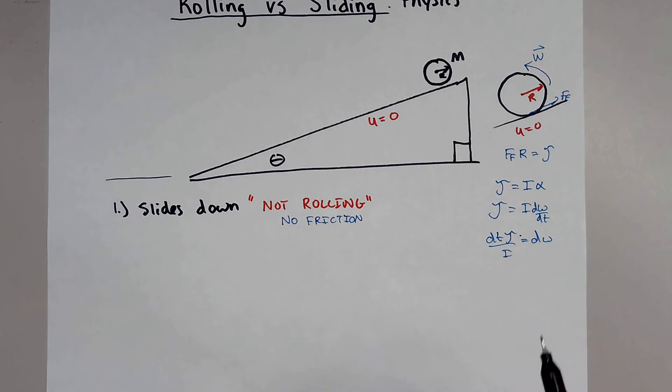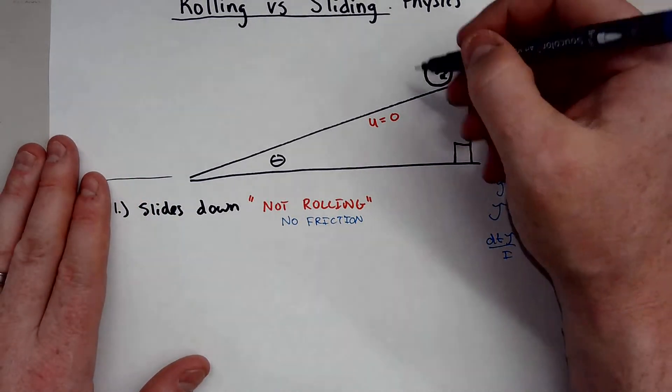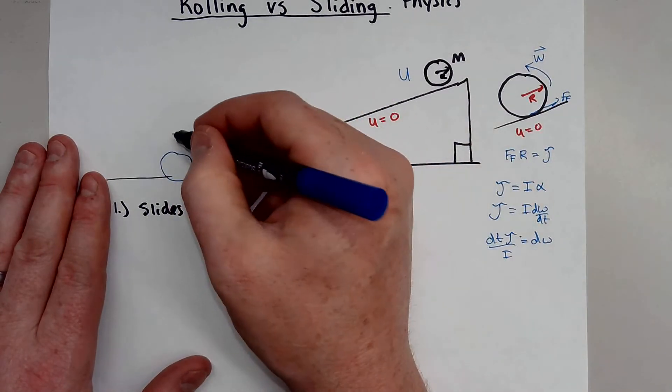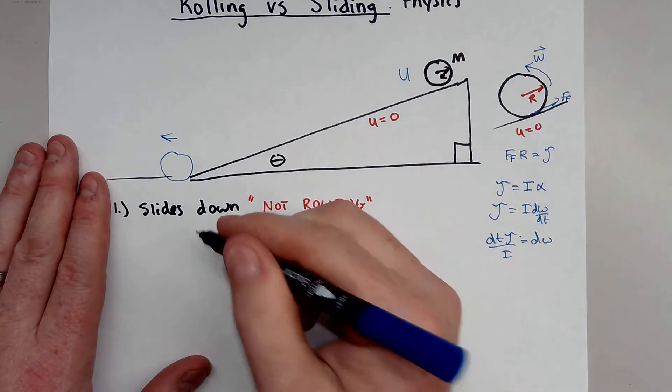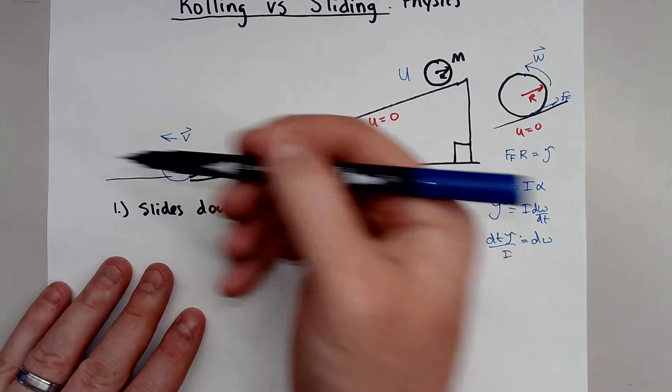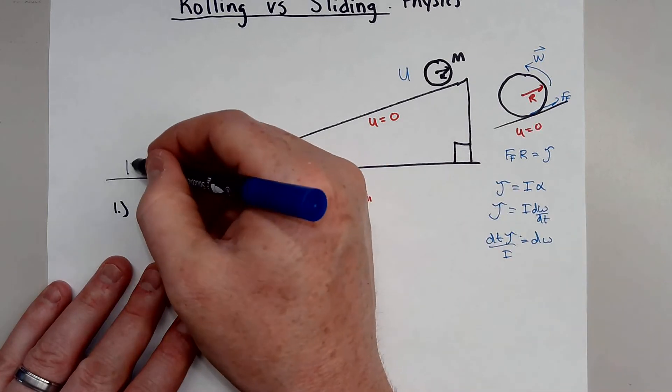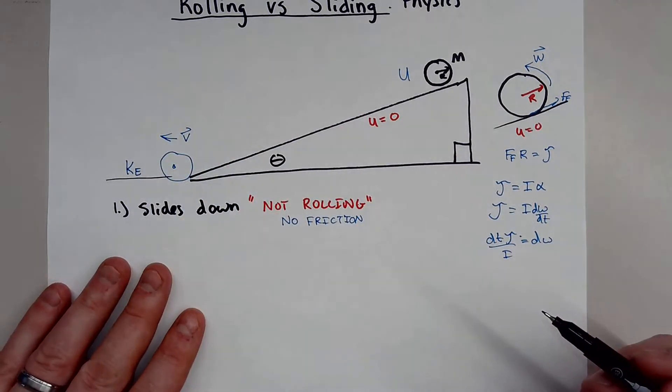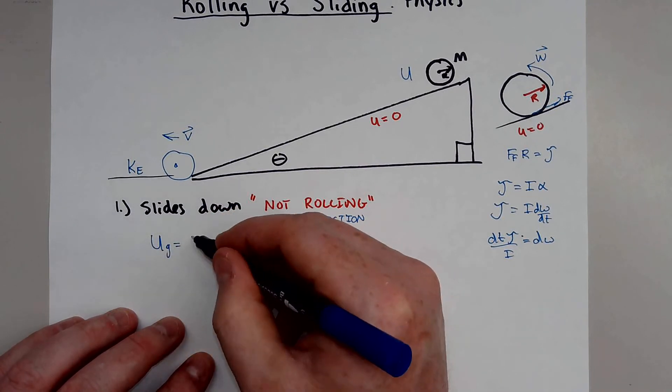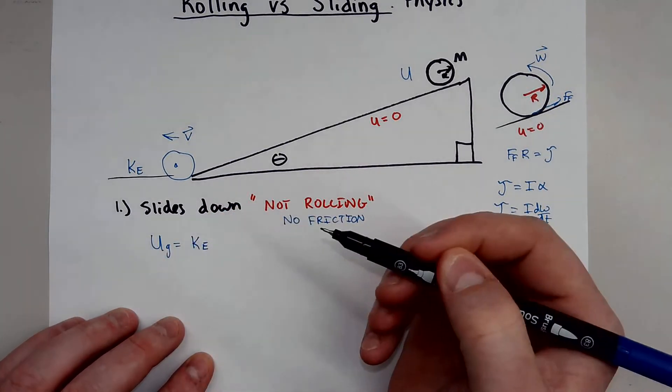So how you would solve this problem would just, you would just use basic energy. For example, there's only potential energy at the top. And at the bottom, as the object reaches the bottom, remember, it's still not rolling, it's just sliding. The center of mass is moving with some velocity V. And it would only have what's called translational kinetic energy.